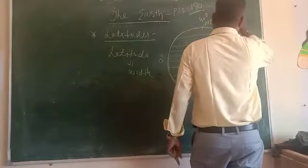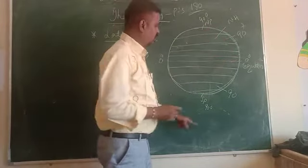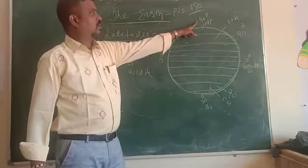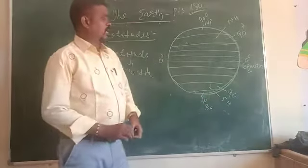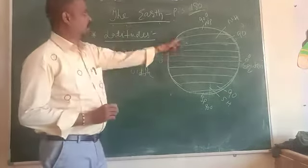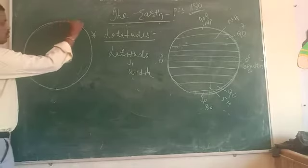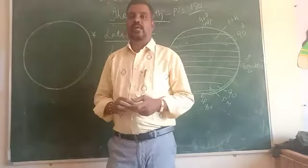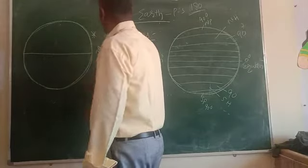From zero degree to the North Pole, this is called the Northern Hemisphere, and from zero degree to the South Pole, this is called the Southern Hemisphere. There are 90 latitudes in the Northern Hemisphere and 90 in the Southern Hemisphere, making 180 latitudes in total. Among all the latitudes, some important latitudes are there with special names.